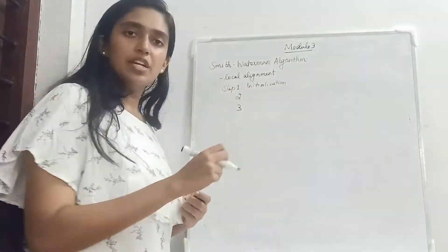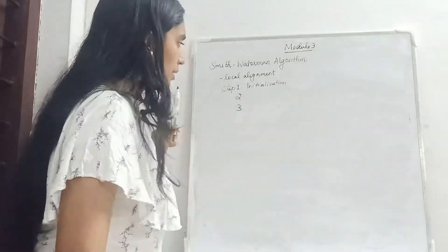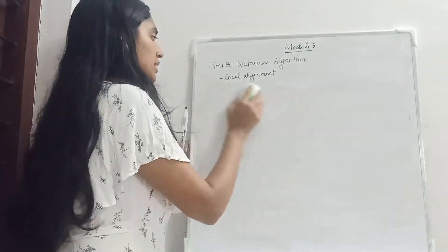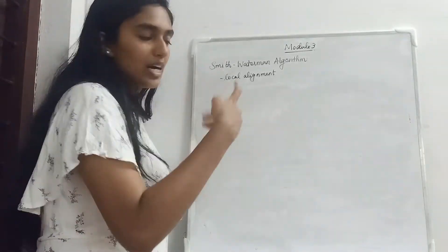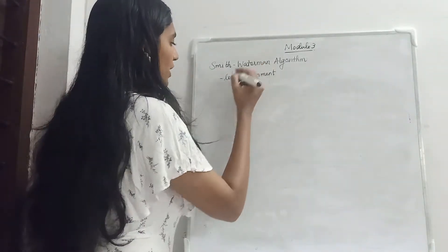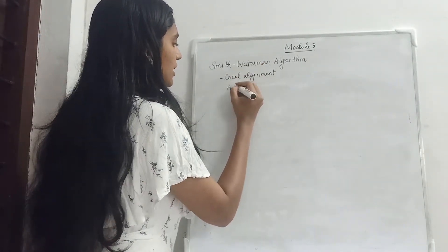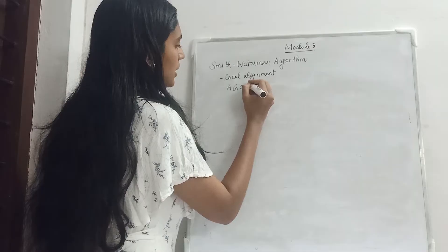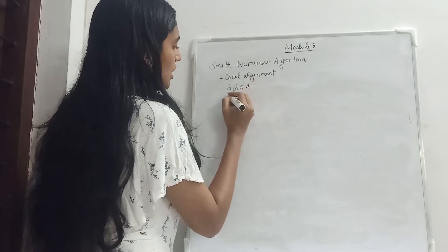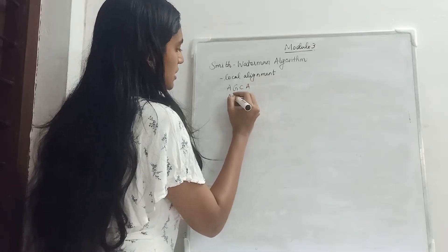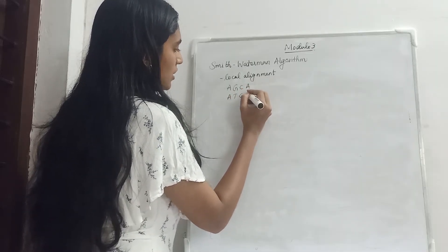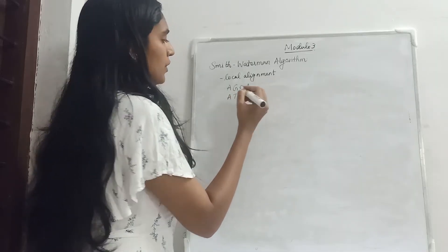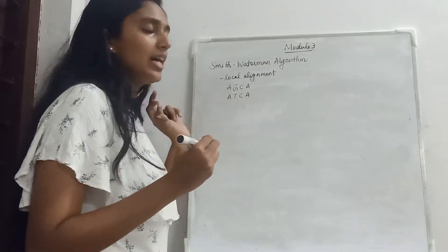The 3rd step will be traceback. We are going to take an example: A C A A T C A A A T.